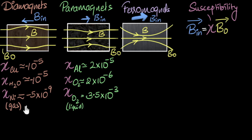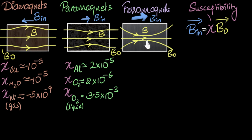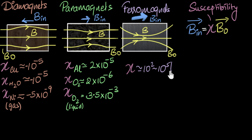For ferromagnets, there is no strict direct relationship between the induced field and the external field — we'll discuss that when we talk about hysteresis. But as a ballpark: the induced field inside is much, much higher than the external field and in the same direction, so susceptibility values can be anywhere from 100 to 10,000 or even a million. Iron, for example, has a susceptibility of about 200,000 — a ridiculously high value.